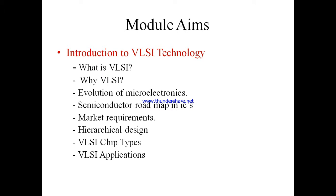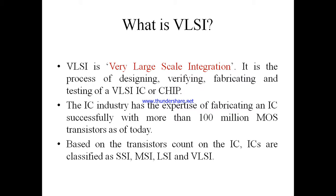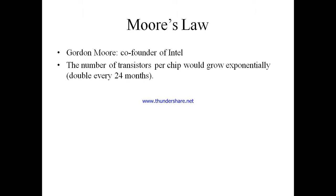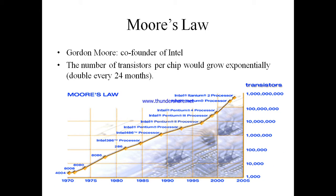The evolution of Microelectronics. Gordon Moore, co-founder of Intel, observed that the number of transistors per chip would grow exponentially every two years — that is, doubled every 24 months. And indeed, the number of transistors has continued to increase.